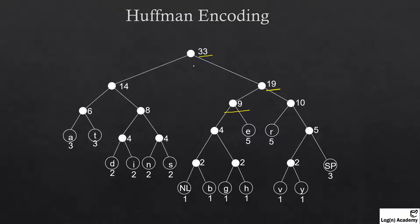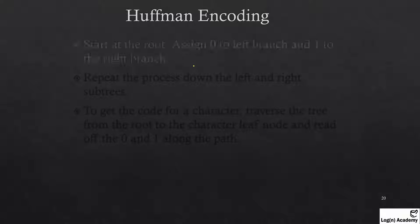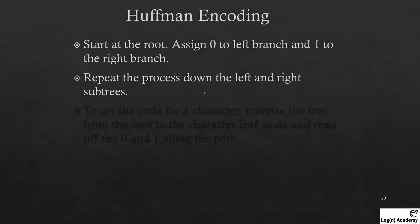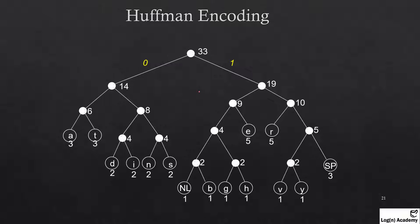Once we have connected all the nodes, the next step is to start at the root and assign 0 to the left branch and 1 to the right branch. Then repeat this process down the left and right subtrees. In this way, we assign 0 to every left branch and 1 to every right branch throughout the entire complete tree.